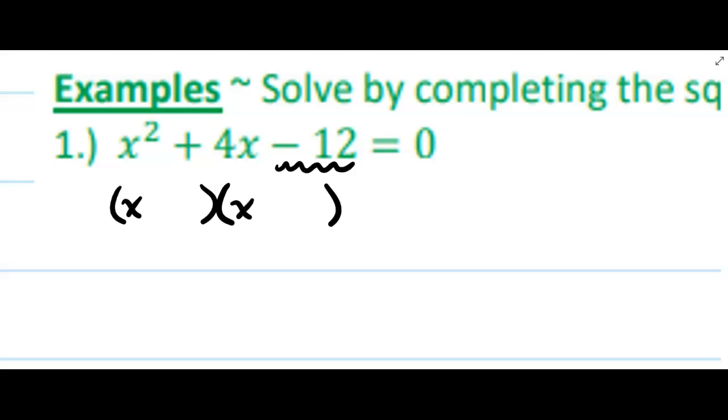As x plus some number, which would give me x plus some number squared. So the first thing I'm going to do is eliminate this problematic number, 12, by adding it to both sides.